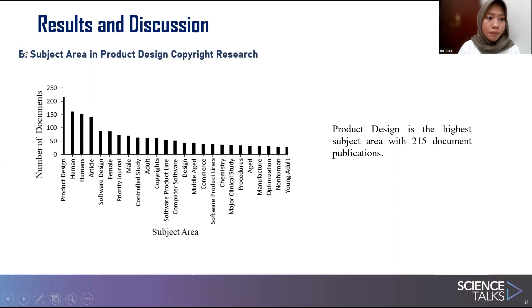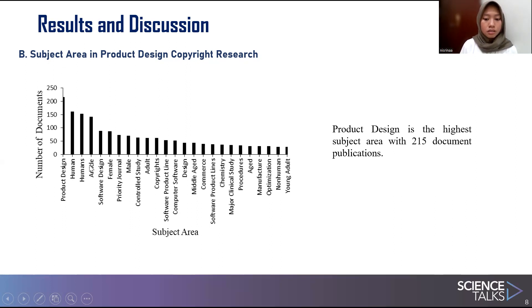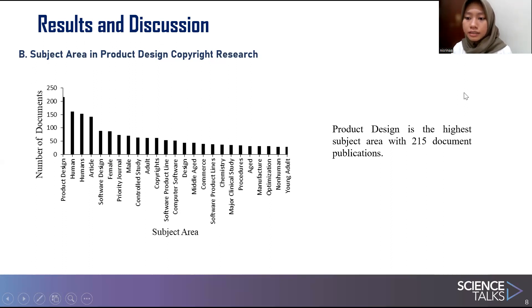These are the graphs about subject area in product design copyright research. Based on the graphs with data taken from Scopus, the keyword product design copyright has a total of 215 research results on product design. This is followed by the keyword human, with a total of 171 research results. Product design is the highest subject area with 1,015 document publications.